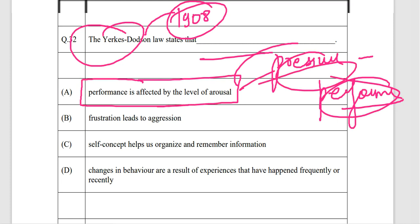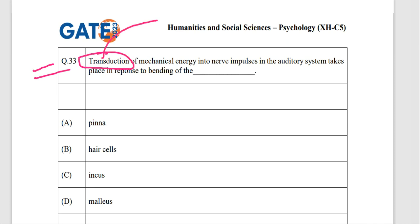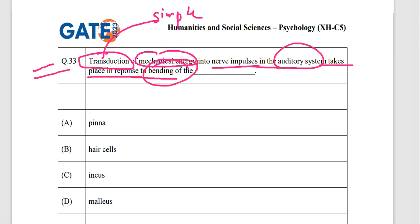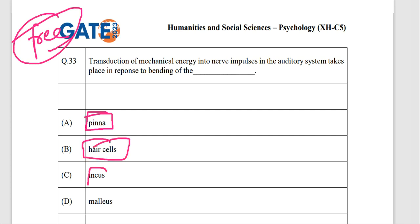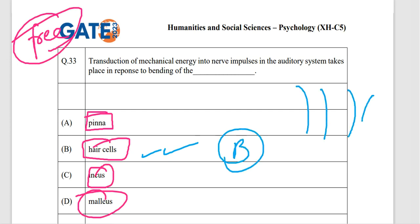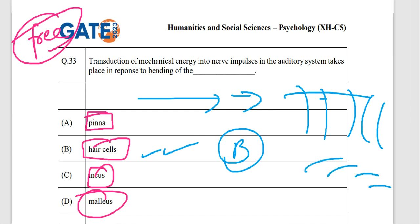The next question on transduction: transduction of mechanical energy into nerve impulses in the auditory system takes place in response to bending of which structure — pinna, hair cells, incus, or malleus? The answer is option B: hair cells. When sound energy comes in, the hair cells bend and nerve impulses are transmitted through the auditory system.